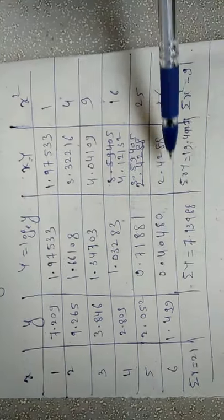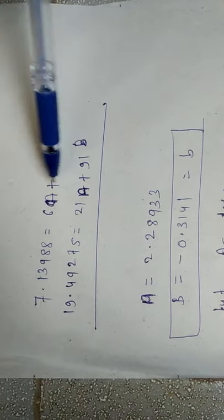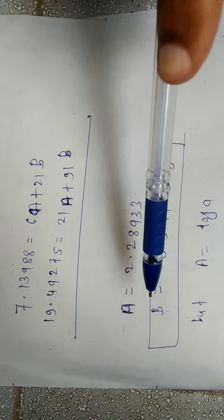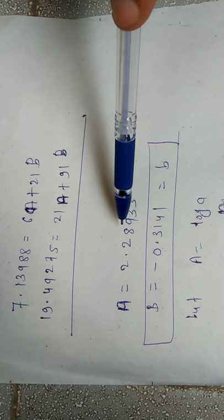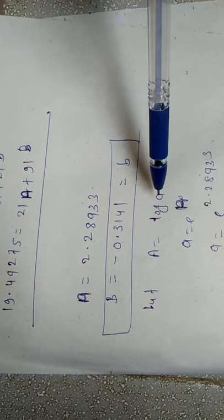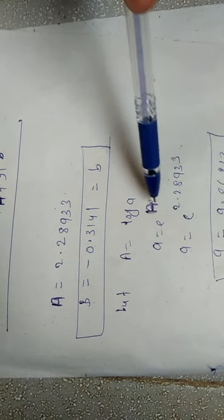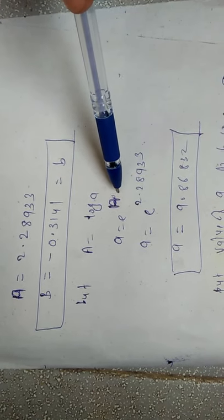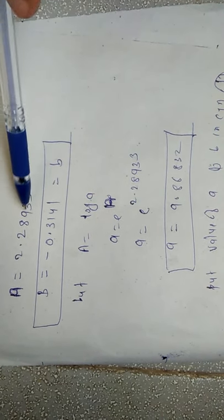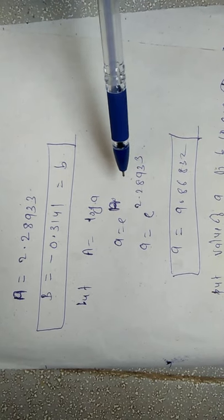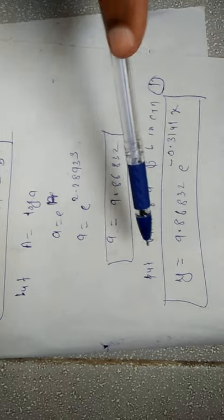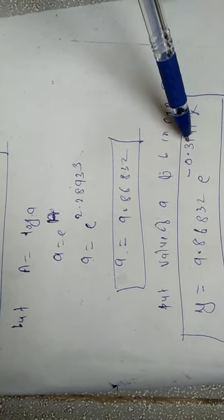After finding the summations, put all values into equations four and five. Solving these two equations gives the value of capital A and capital B. Capital B and small b are the same. To find small a, we know that capital A is equal to log a, so small a is equal to e to the power capital A — apply the exponential function. Our main aim is to find small a and small b. After calculating them, put the values into equation one: y is equal to a times e to the power bx. This is the required solution.